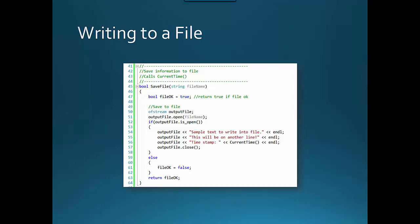Here's an example of writing to a file. It's good to have a Boolean in the save file function that indicates whether the file was successfully saved. We start by declaring a fileOK Boolean and initializing it to true. Then we declare an ofStream output file. To use the ofStream library, you must include the fstream library with an include statement. Then we open the output file by calling the open method and passing in a string which is the file name.